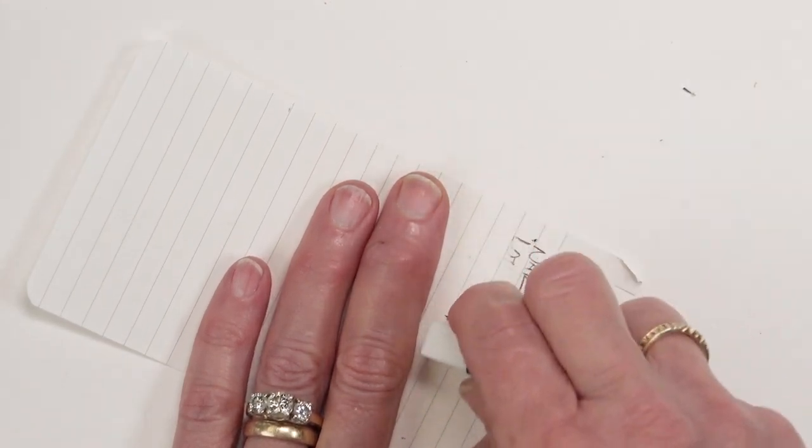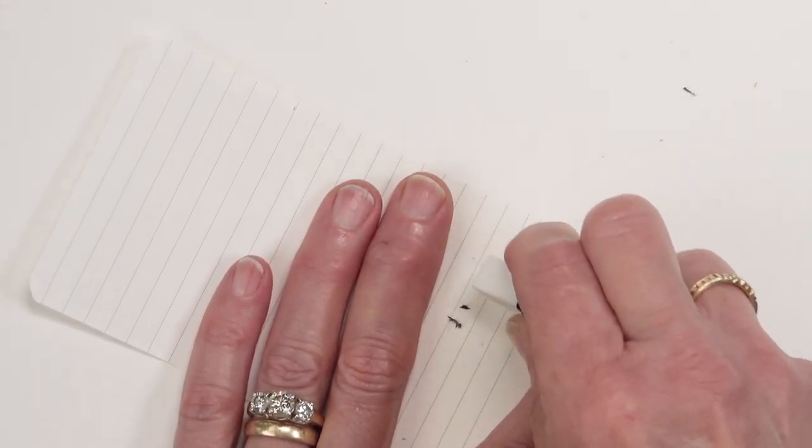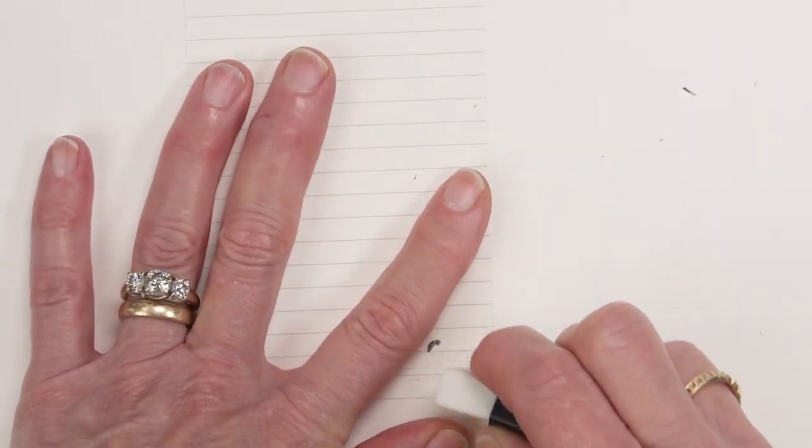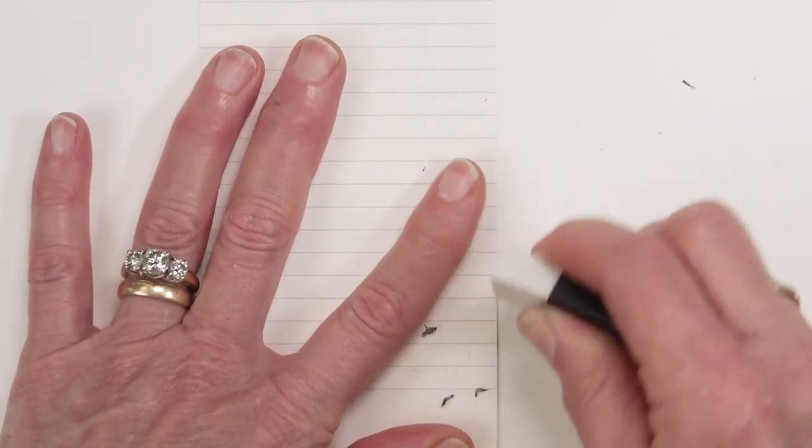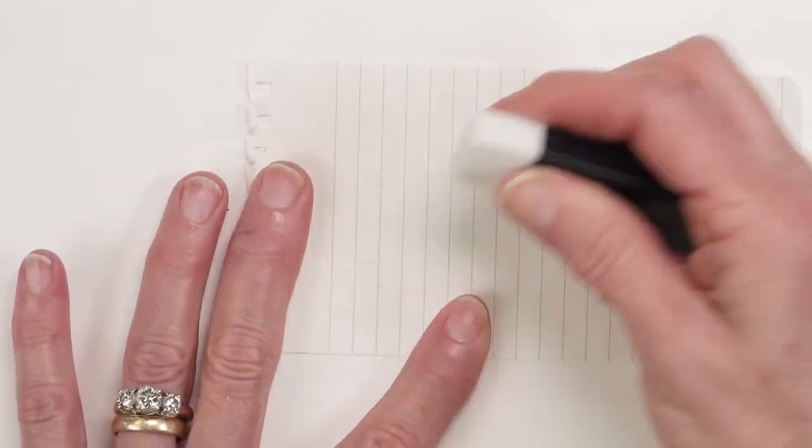This is a page from my Blackwing reporter's notebook. So this is Blackwing paper. Oh yeah, that's a nice eraser.